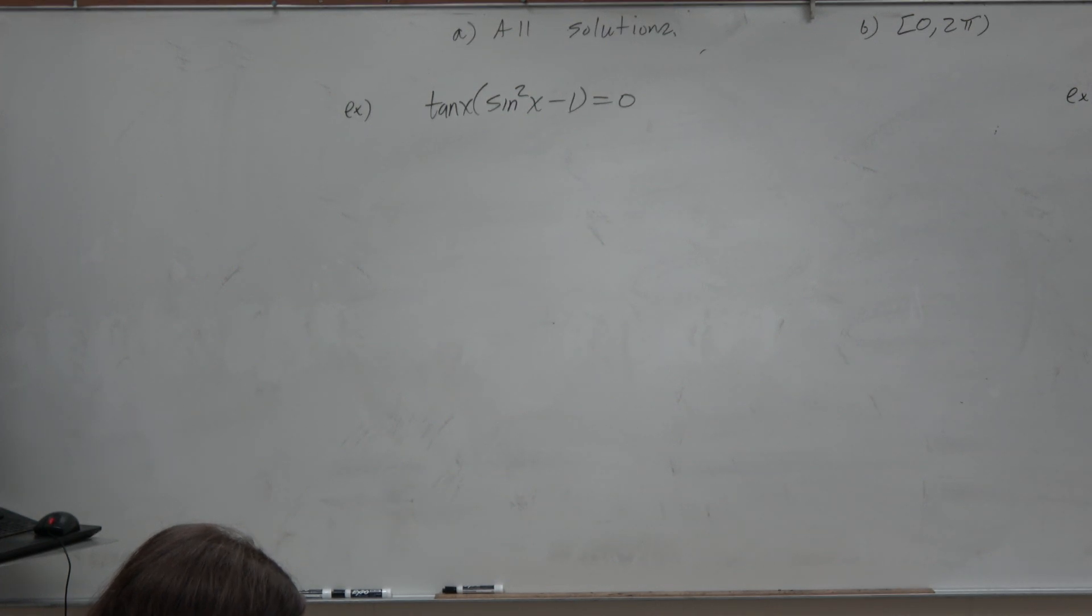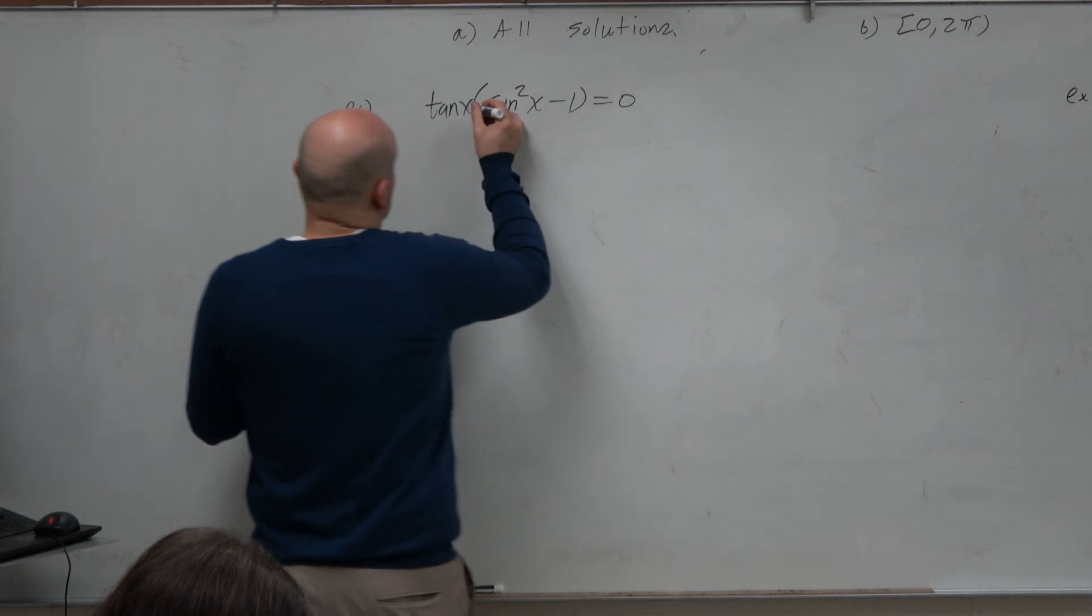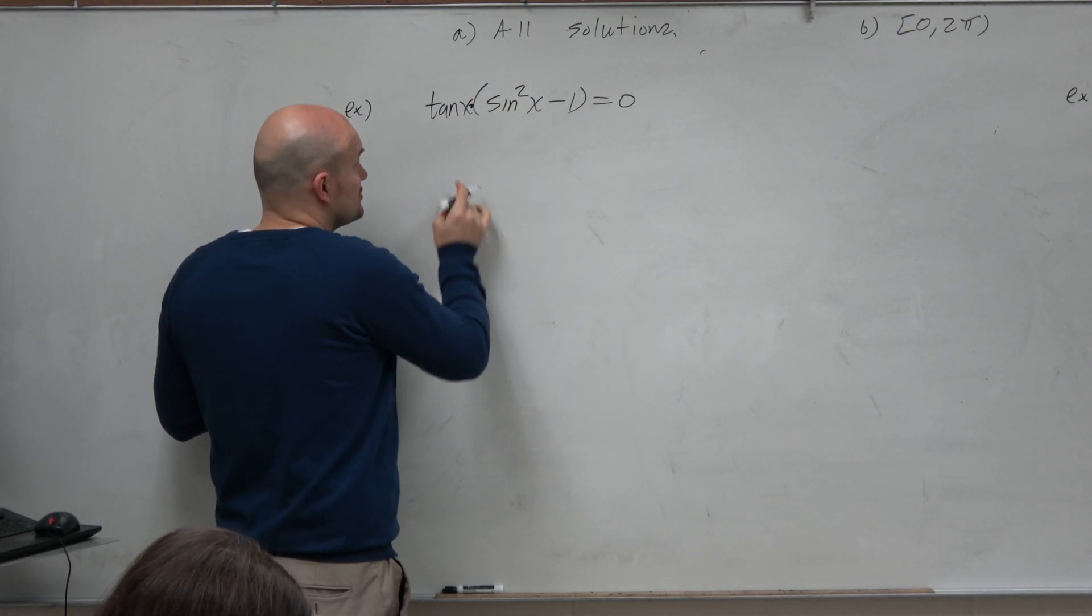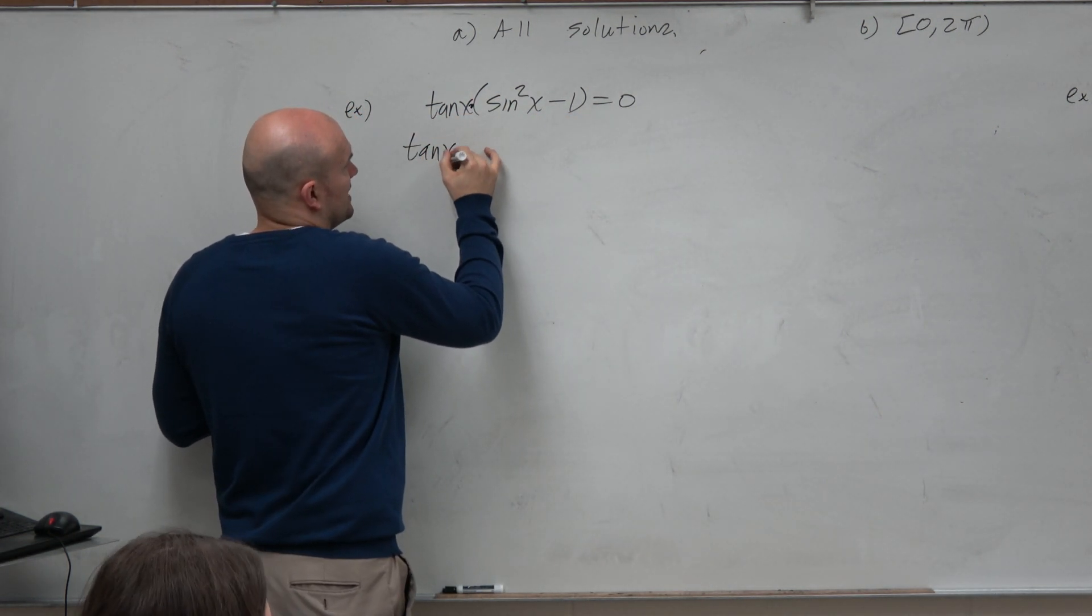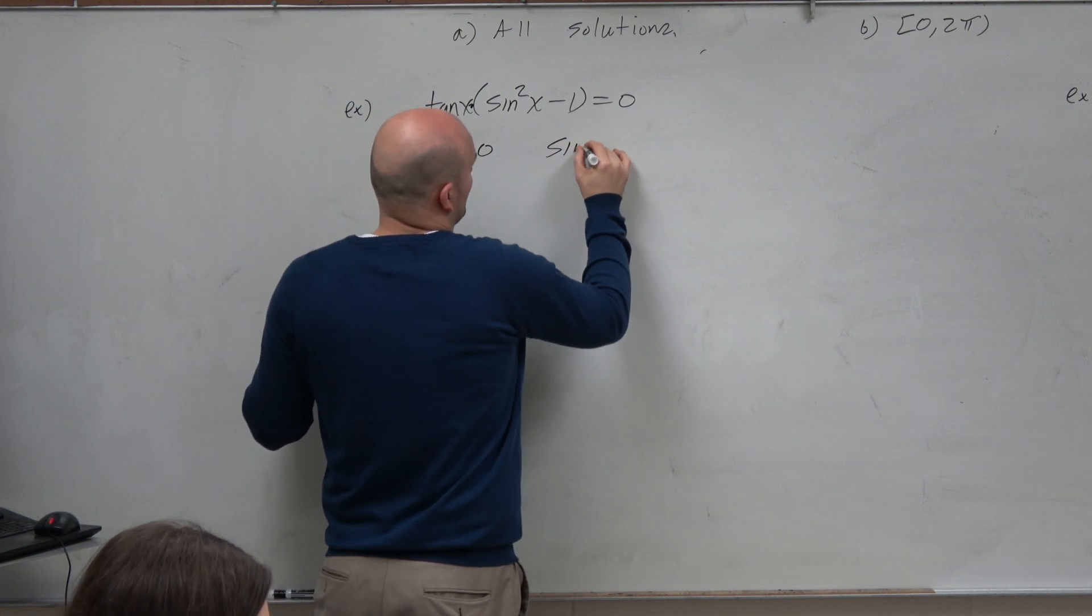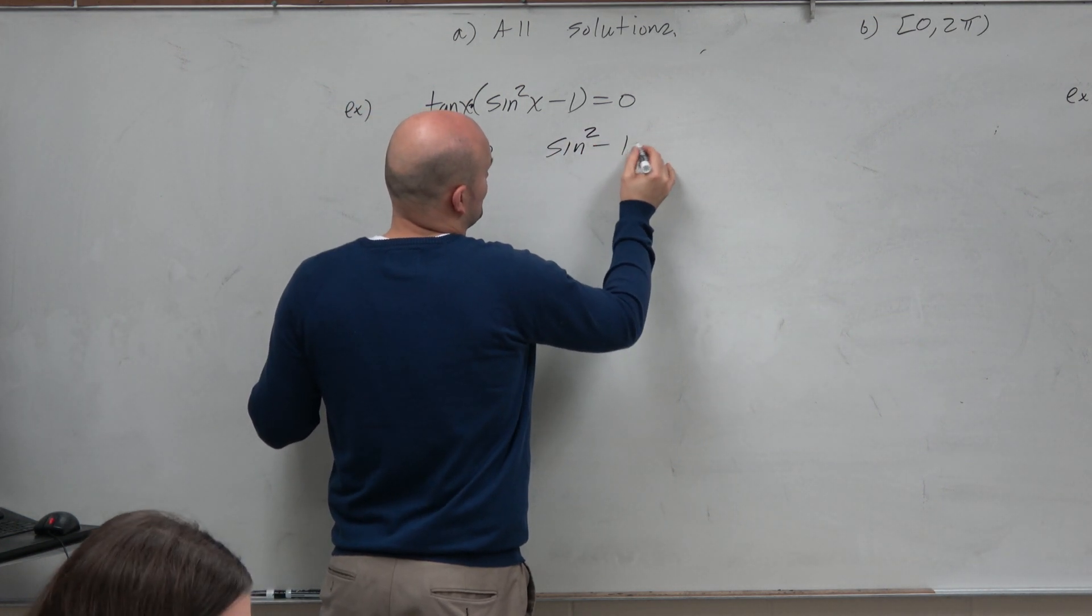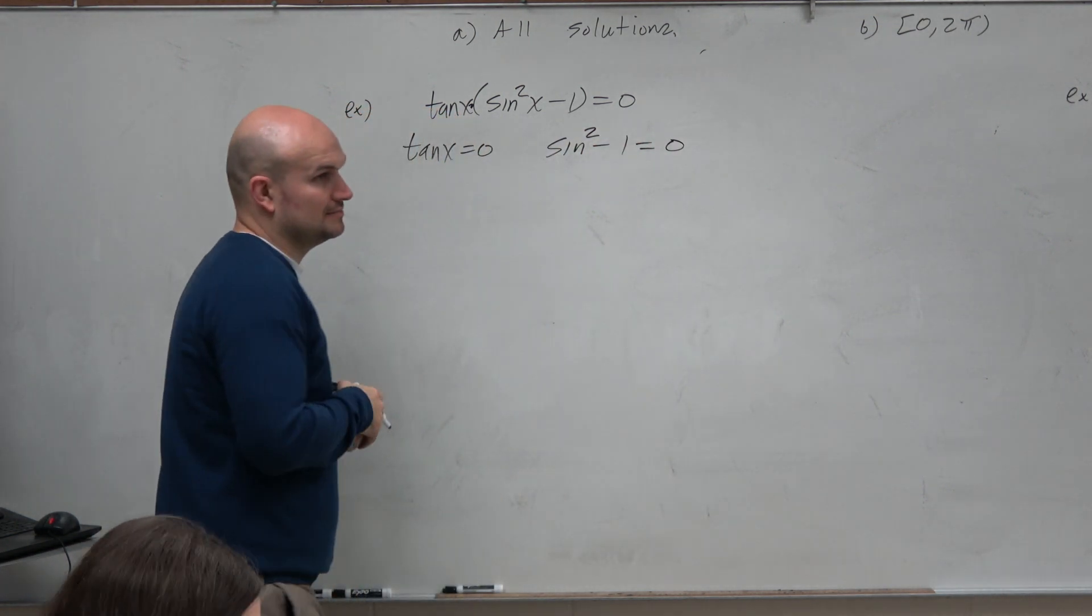OK. So we see the product. We see a product of two expressions equal to 0. So we set each one equal to 0. Tangent of x equals 0. And sine squared minus 1 is equal to 0.